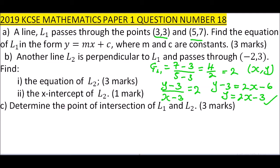Part B: another line L2 is perpendicular to L1. What do we know about perpendicular lines? The product of their gradients equals −1. So we can find the gradient of L2 = −1/2, because (−1/2) × 2 = −1.